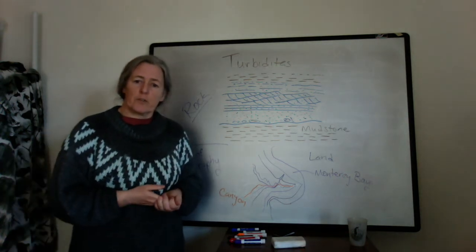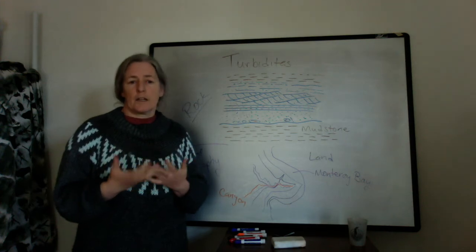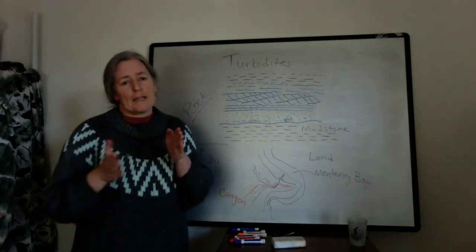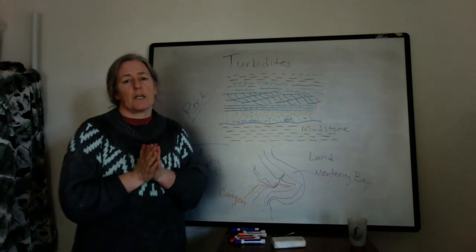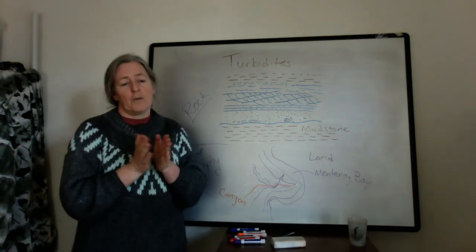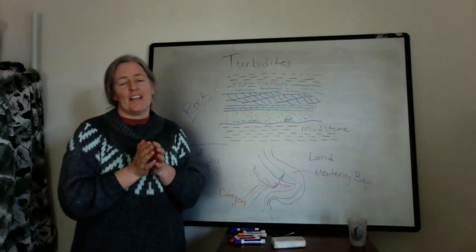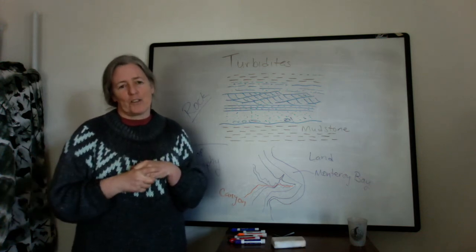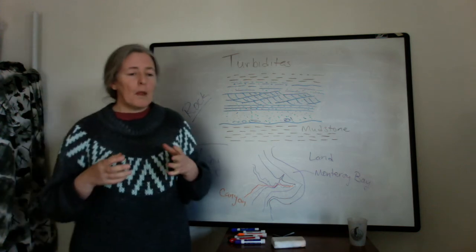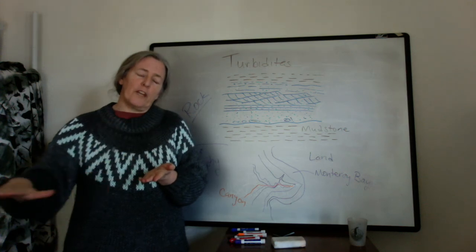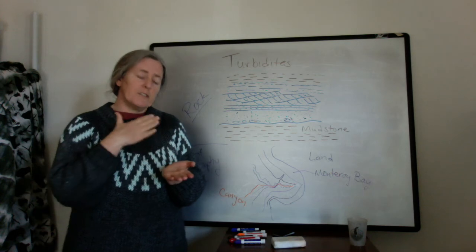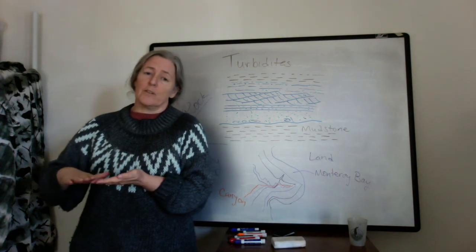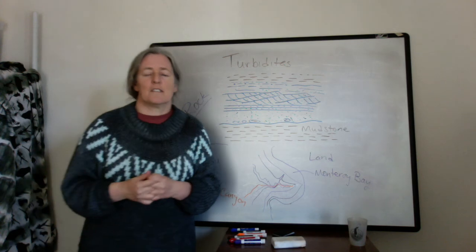People had proposed turbidity currents before, but there wasn't a real understanding of how they worked and how fast they actually went. By looking at the sequence of cable breaks, they were able to calculate that the flow speed was initially 90 kilometers an hour, then slowing down to 20 kilometers an hour — still very, very fast. They could also track the slope of the area where the cables broke: it was a very steep slope initially, and the turbidity current slowed as the slope decreased, which is very consistent with the dynamics.